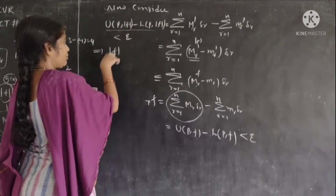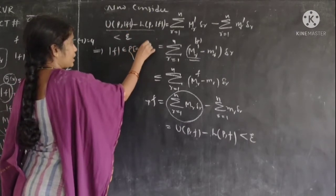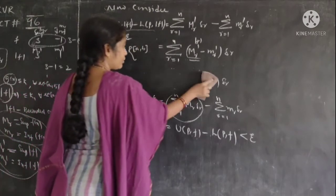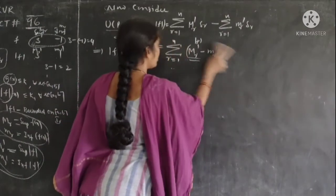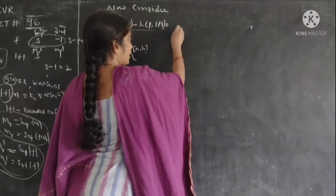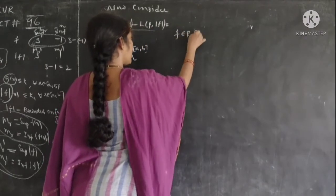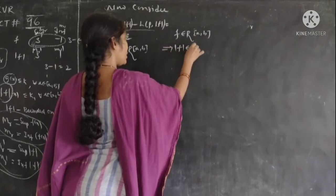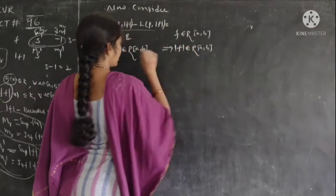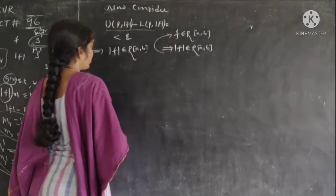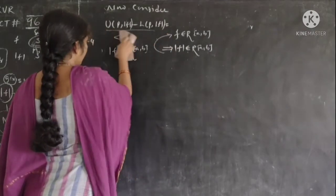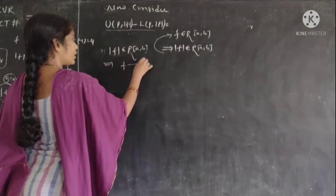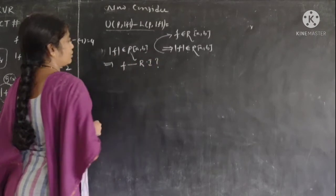Therefore, by the necessary and sufficient condition, mod F is a Riemann integrable function on closed [a, b]. Now let us consider the converse: if mod F is a Riemann integrable function on closed [a, b], does that mean F is also a Riemann integrable function? The converse is not necessarily true — we need to write the reverse.